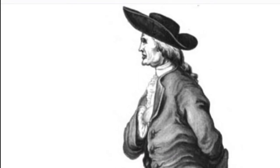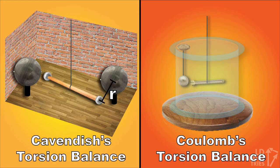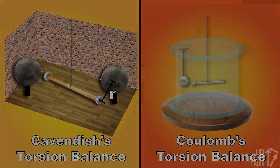in an experiment that would lead to the determination of the universal gravitational constant. In this video, I'm going to show you how each of these torsion balances worked.